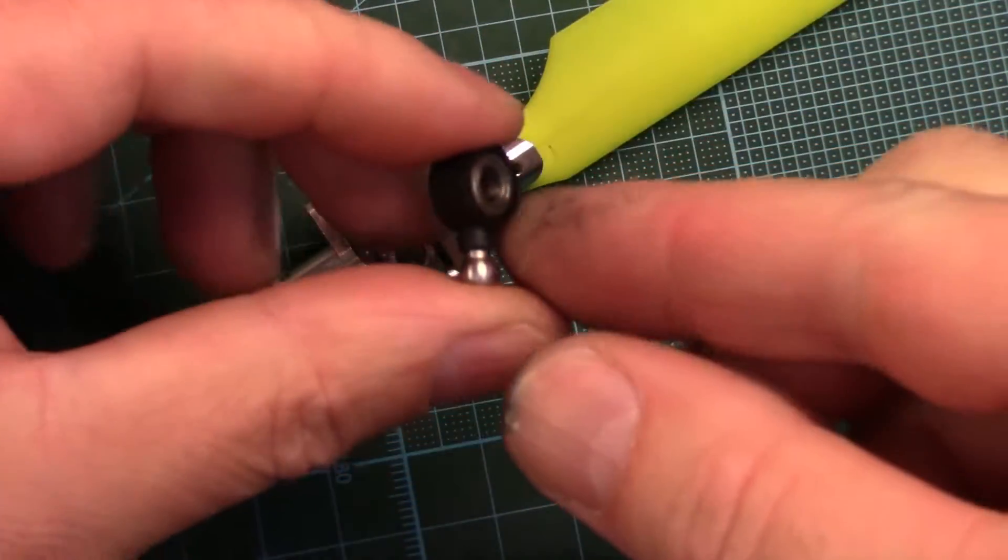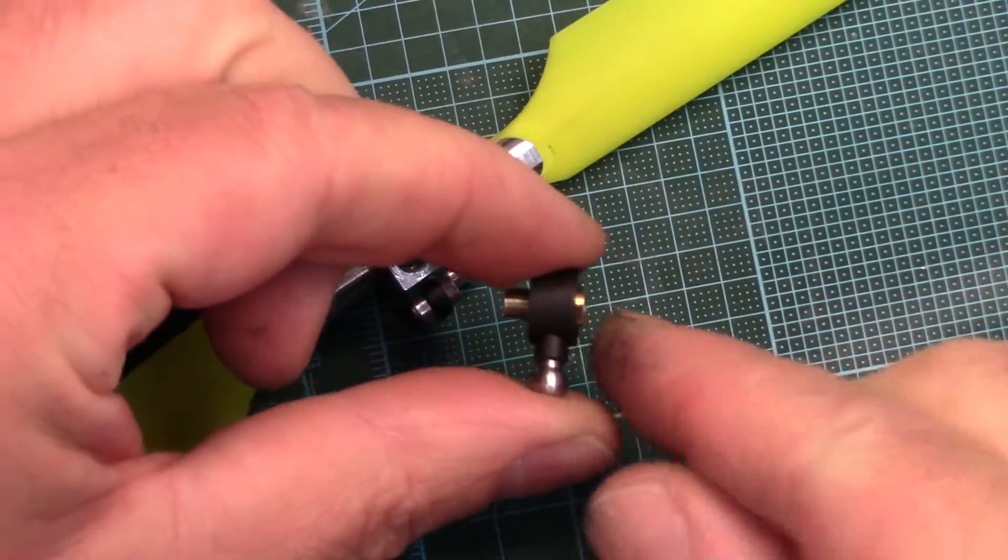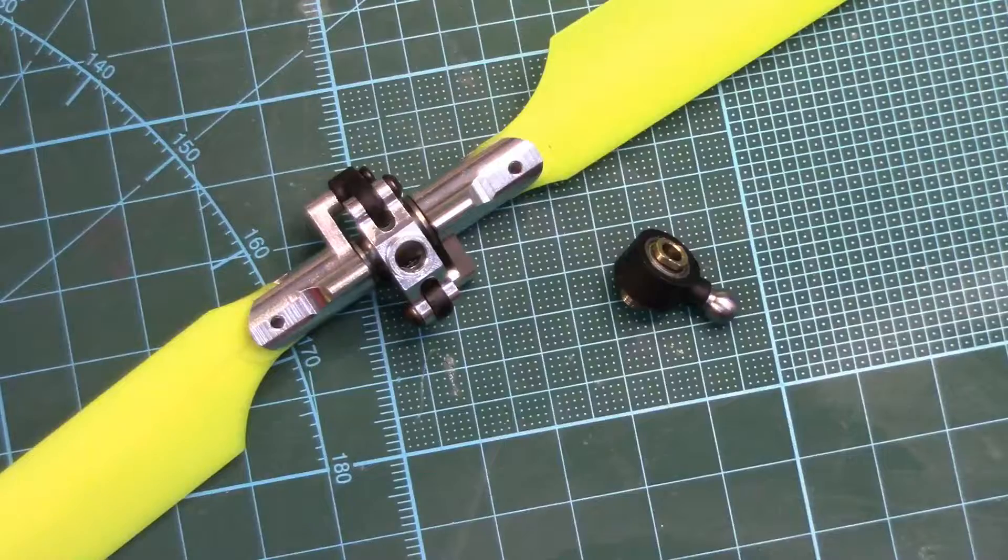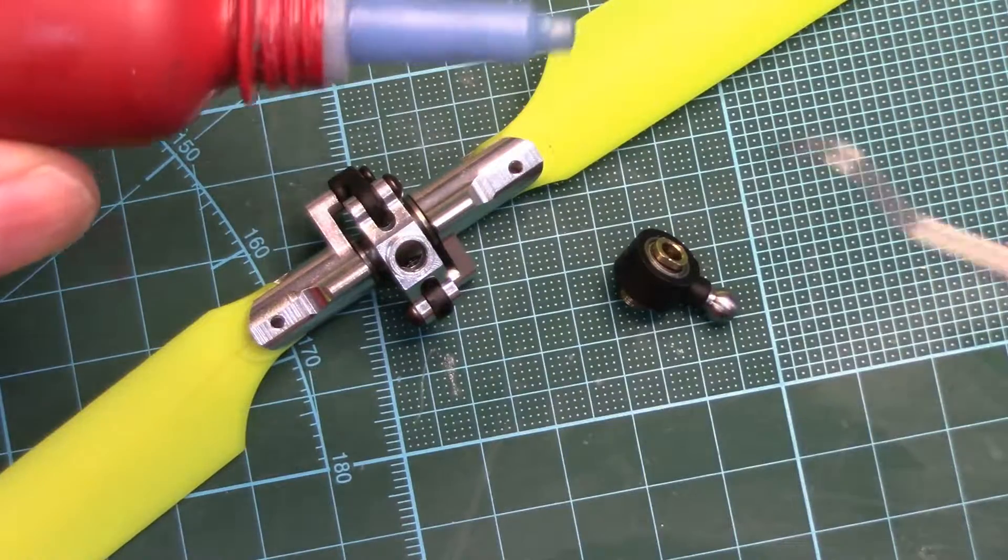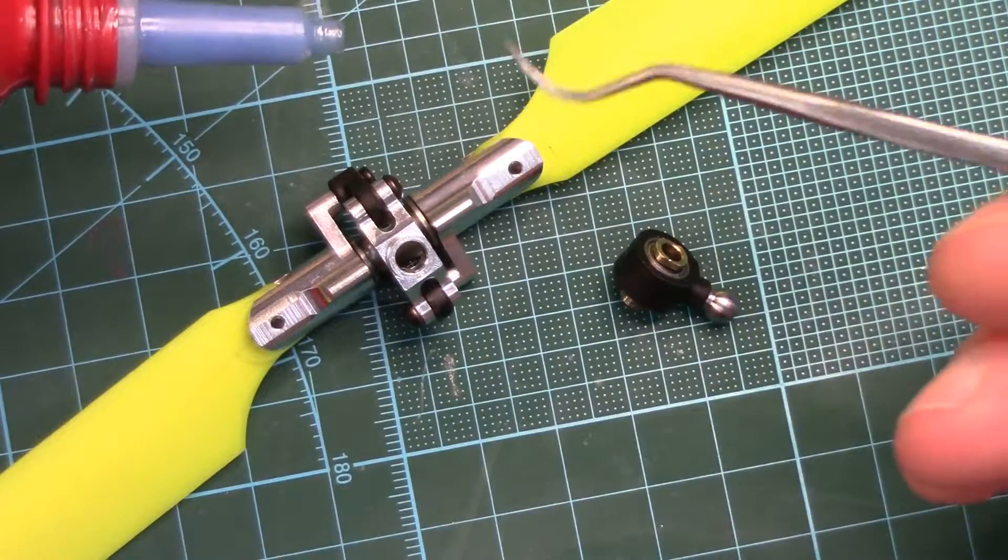So I've inspected the bearings, they seem to be fine, cleaned everything up. I'm going to slide the slider shaft through and I'm just going to use Loctite 242 because that's what I've got handy—this is just blue Loctite. I'm going to apply it to a dental tool.